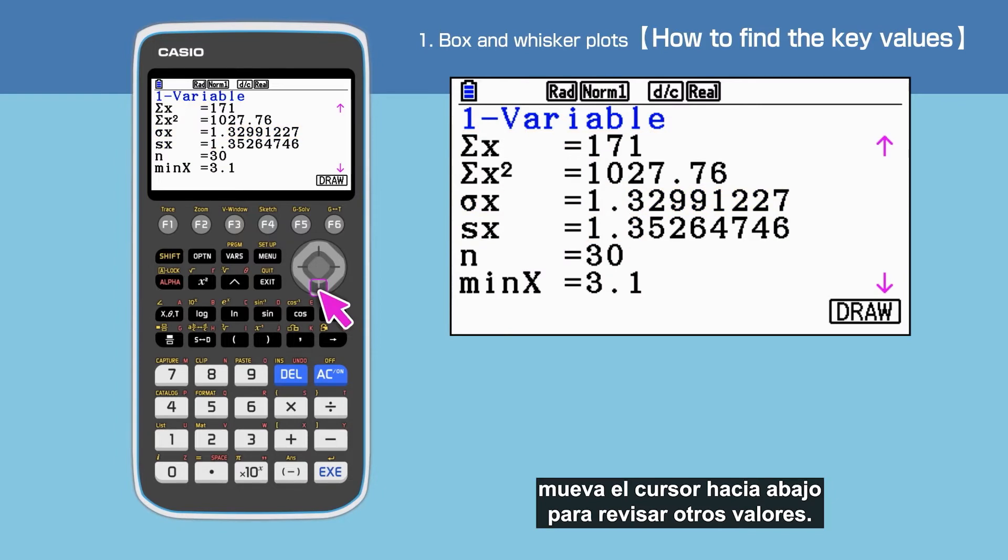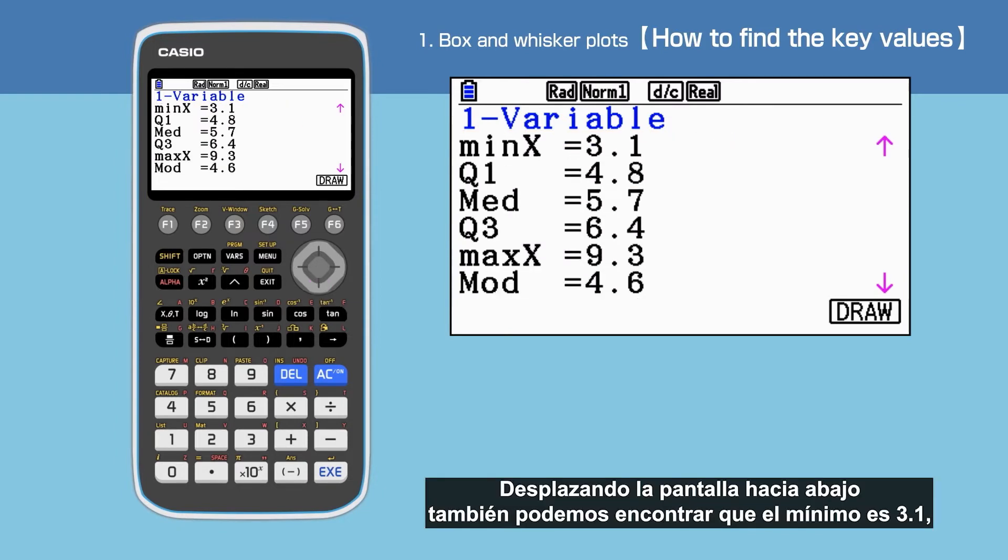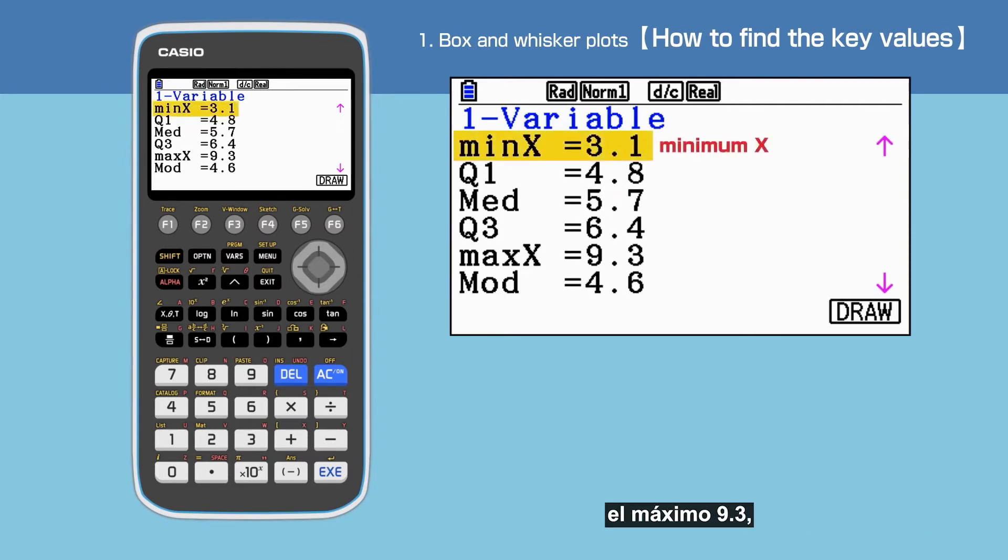Move the cursor down to check other values. Scrolling down the screen, we also find that the minimum is 3.1, the maximum is 9.3, the median is 5.7 and the mode is 4.6.